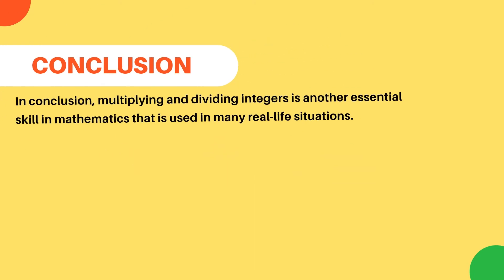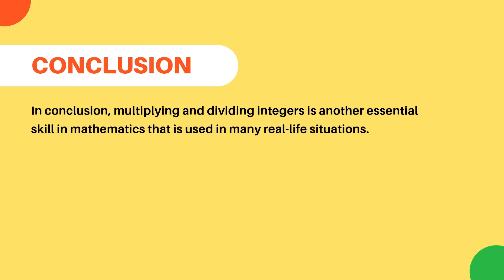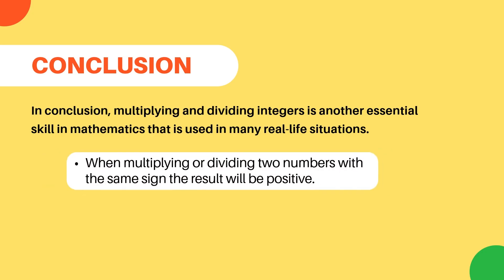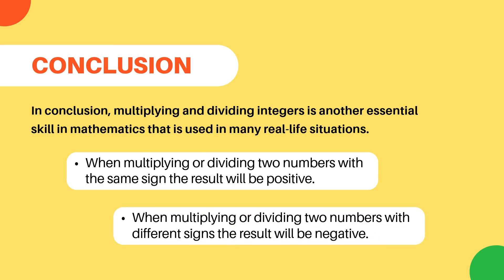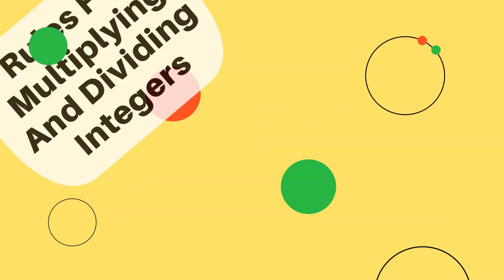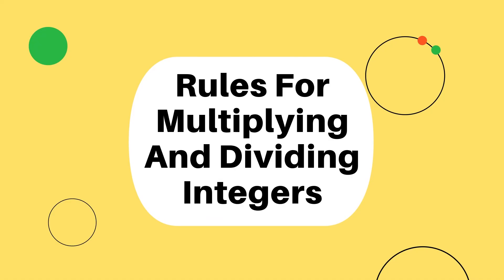In conclusion, multiplying and dividing integers is another essential skill in mathematics that is used in many real-life situations. In this lesson, we learned the two rules of multiplying and dividing integers: when multiplying or dividing two numbers with the same sign, the result is positive, and when multiplying or dividing two numbers with different signs, the result is negative. You can now use these rules to practice some calculations with multiplying and dividing integers.